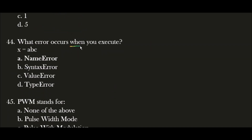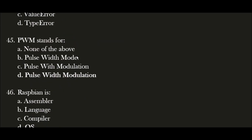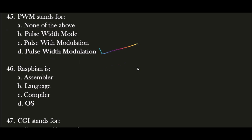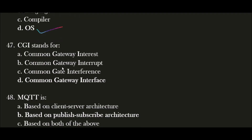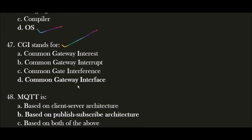Next question: What error occurs when you execute x = ABC? The error that occurs here is a Name Error — correct answer is option A. Next question: PWM stands for? The correct answer is option D — Pulse Width Modulation. Next question: Raspbian is? The correct answer is option D — an operating system. Raspbian is an operating system, not a compiler, language, or assembler. Next question: CGI stands for Common Gateway Interface — option D is correct.